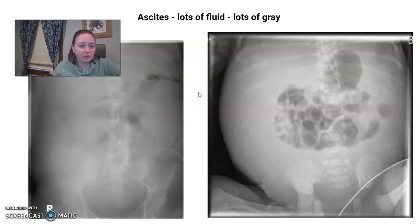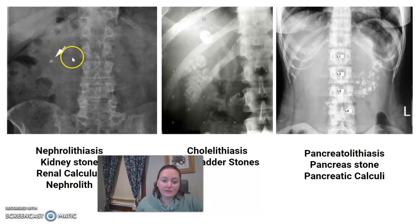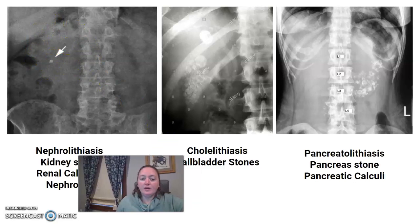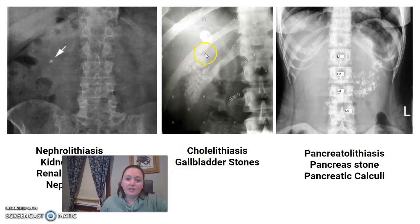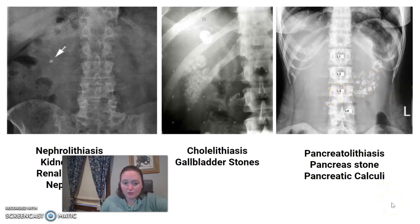Here are examples of stones. Kidney stones can be called nephrolithiasis or renal calculus — here we can see the kidney and a kidney stone. Gallbladder stones, or cholelithiasis, are in the gallbladder. Pancreatic stones, since the pancreas runs across, can be referred to as calculi or pancreolithiasis. A stone is hard and more dense, making all of these your additive diseases for the abdomen.